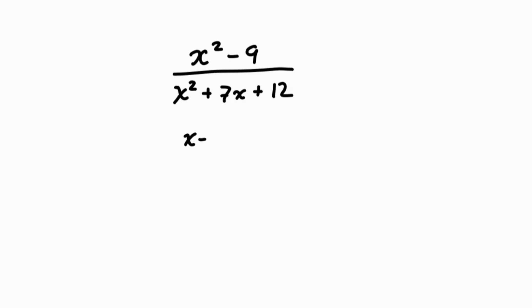So the numerator factors into x minus 3 times x plus 3. The denominator factors into x plus 3 times x plus 4. Now we can state the restrictions.